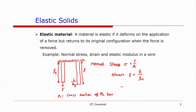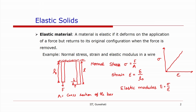The elastic modulus E is defined as sigma over epsilon. For an elastic material, you might remember that the relationship between stress and strain — sigma and epsilon — is a linear relationship, and the slope of that graph is equal to the elastic modulus E.